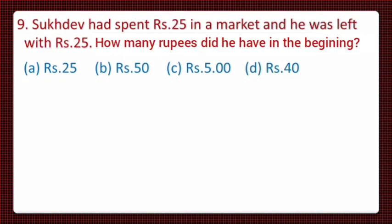Next, question number 9 is: Sukhdev has spent rupees 25 in a market and he was left with rupees 25. How many rupees had he in the beginning? Its 4 options are: option A is 25 rupees, B is 50 rupees, C is 5 rupees, and D is 40 rupees.